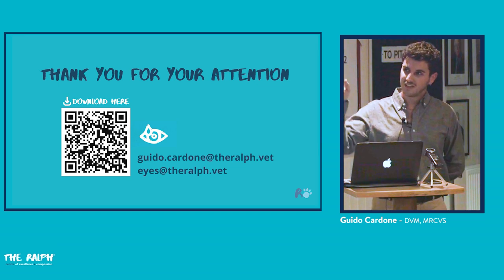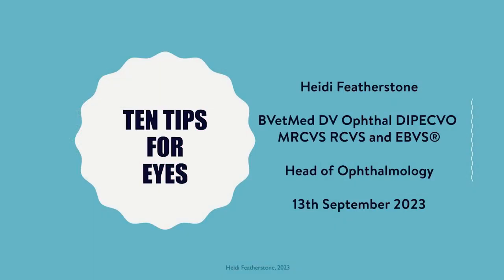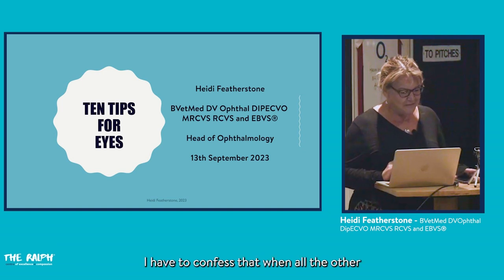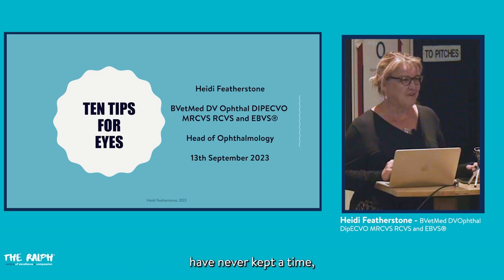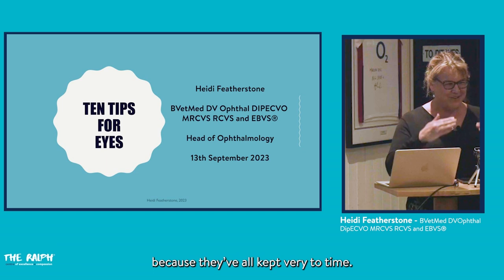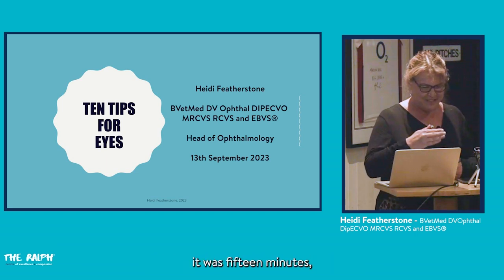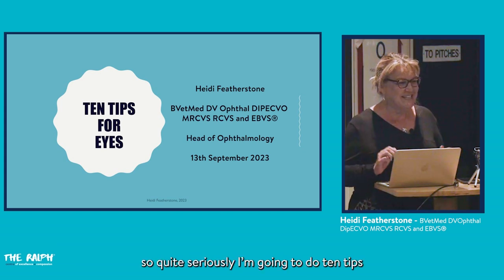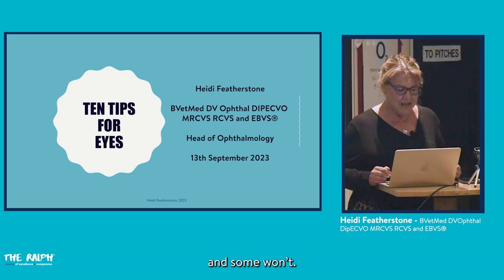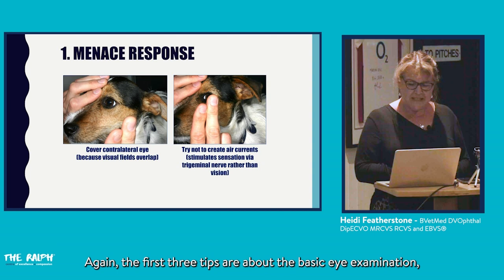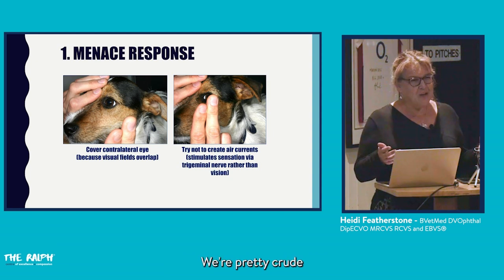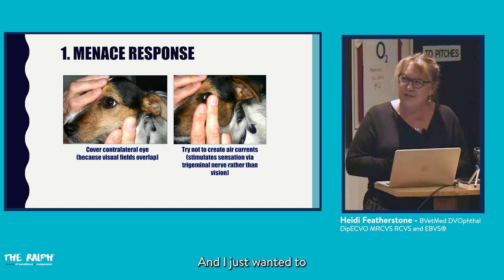I'm going to finish with 10 tips — some random, some linking to earlier talks. The first three are about basic eye examination. The menace response is the main test for vision in animals. We're fairly crude in how we test vision, but a couple of important points: most patients have two eyes with overlapping visual fields, so it's really important to cover the eye you're not testing.